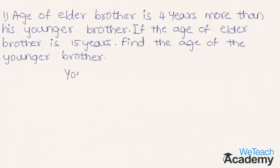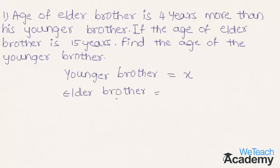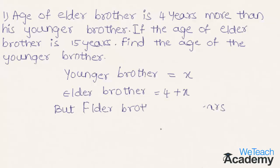Let us consider the age of the younger brother as x. The age of the elder brother is 4 years more than his younger brother, which can be represented as 4 plus x. But according to the problem, the age of the elder brother is 15 years.